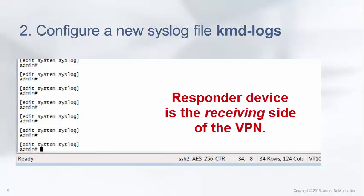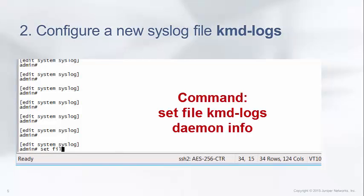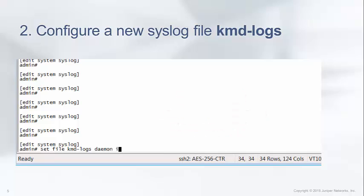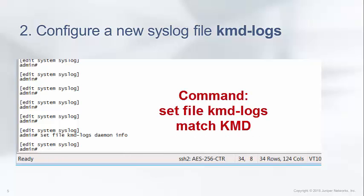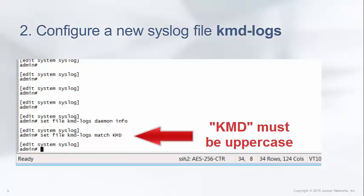Recall that the responder device is the receiving side of the VPN — this is the side that receives the tunnel setup request, not the side that initiates it. On the responder device, navigate to the system syslog stanza and create a new file called KMD logs with the following two options: the daemon level must be set to info, and it must be set to match the keyword KMD. Note that the keyword KMD must be in uppercase. Commit the configuration.